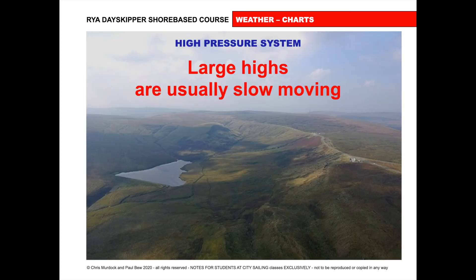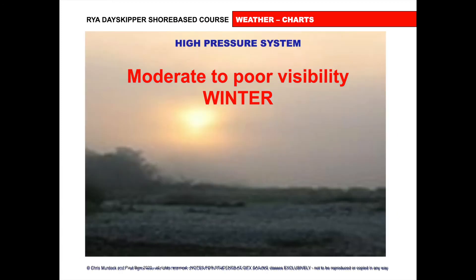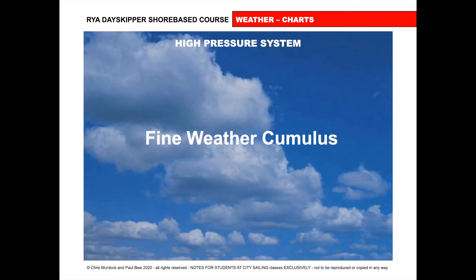Large highs are usually slow moving — the air sinks down, the jet stream stays in one place, and the system sticks around for some time. In summer we'll get hazy conditions with moderate to poor visibility. In winter, fair or fine weather with cumulus clouds — cumulus being the fluffy clouds.